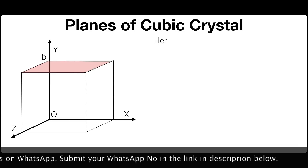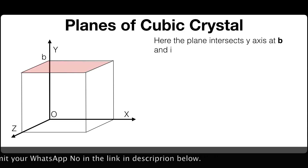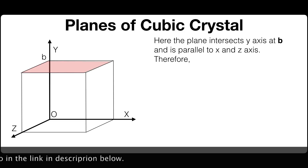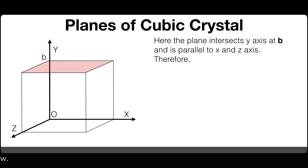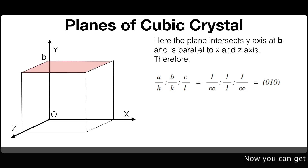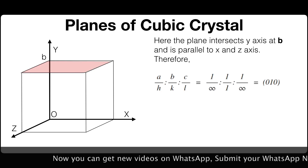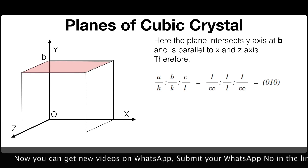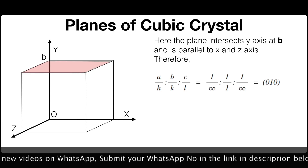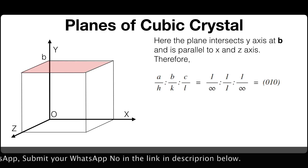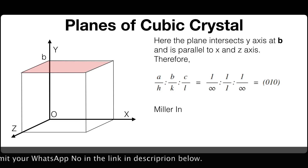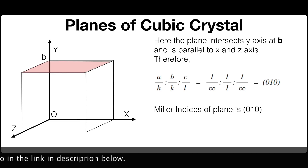Here the plane intersects the y-axis at B and is parallel to the x and z-axis. Therefore the ratio A/H : B/K : C/L = 1/∞ : 1/1 : 1/∞, which equals 0, 1, 0. So the Miller indices of this plane is (0 1 0).